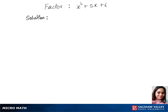Let's factorize this trinomial. We'll first find factors for six: three times two, and also one times six. The sums of each of these pairs are three plus two equals five, and six plus one equals seven. We see that five is matching up